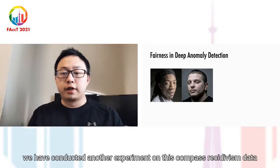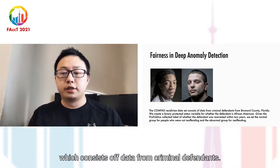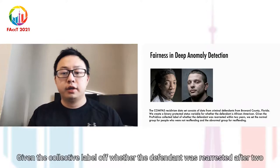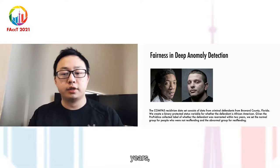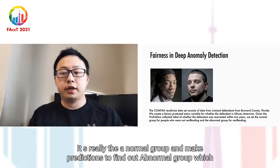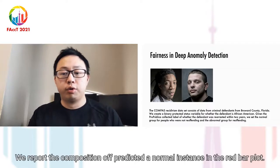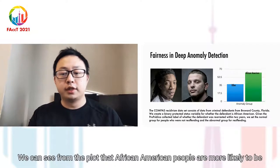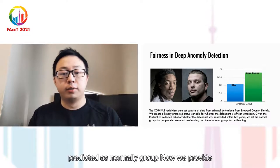Moreover, we conducted another experiment on the COMPAS recidivism data, which consists of data from criminal defendants. We create a binary PSV for whether the defendant is African-American. Given the collected label of whether the defendant was re-arrested after two years, we train deep SVDD on the normal group and make predictions to find the abnormal group. We report the composition of predicted anomaly instances in the red bar plot. We can see that African-American people are more likely to be predicted as the anomaly group.